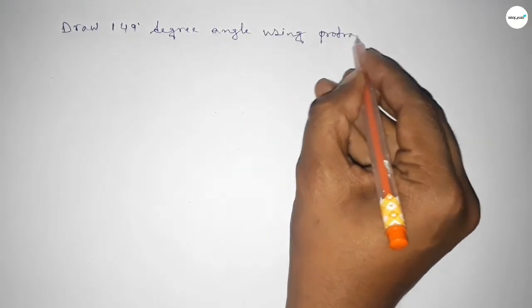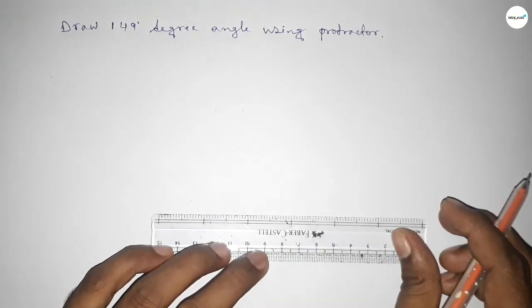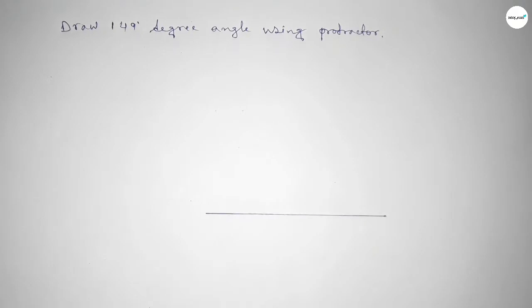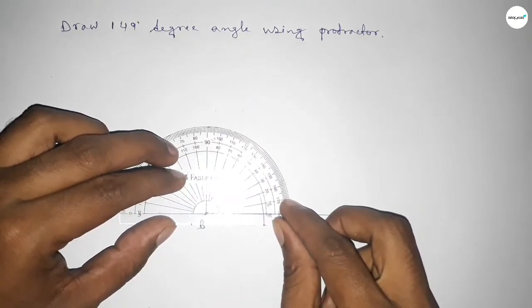First of all, we draw a straight line of any length. Next, we mark point B and point C here. Now we place the protractor on point B perfectly and begin counting the angles.